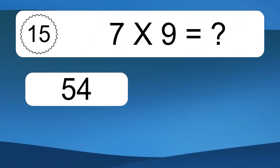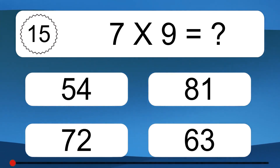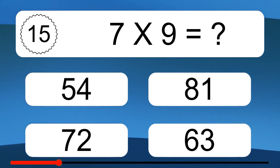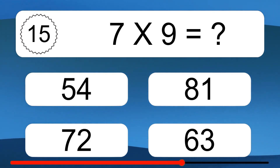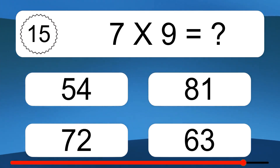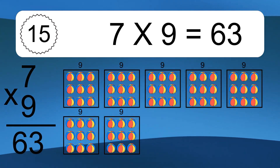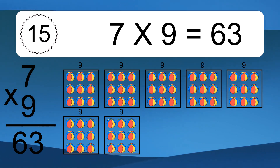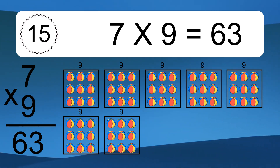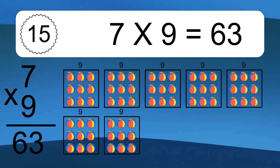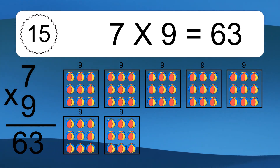Seven times nine equals what? Seven times nine equals 63. We have seven boxes, and each box has nine colorful balls inside. If you count all the balls in all the boxes together, you will have seven times nine balls. This equals 63 balls.